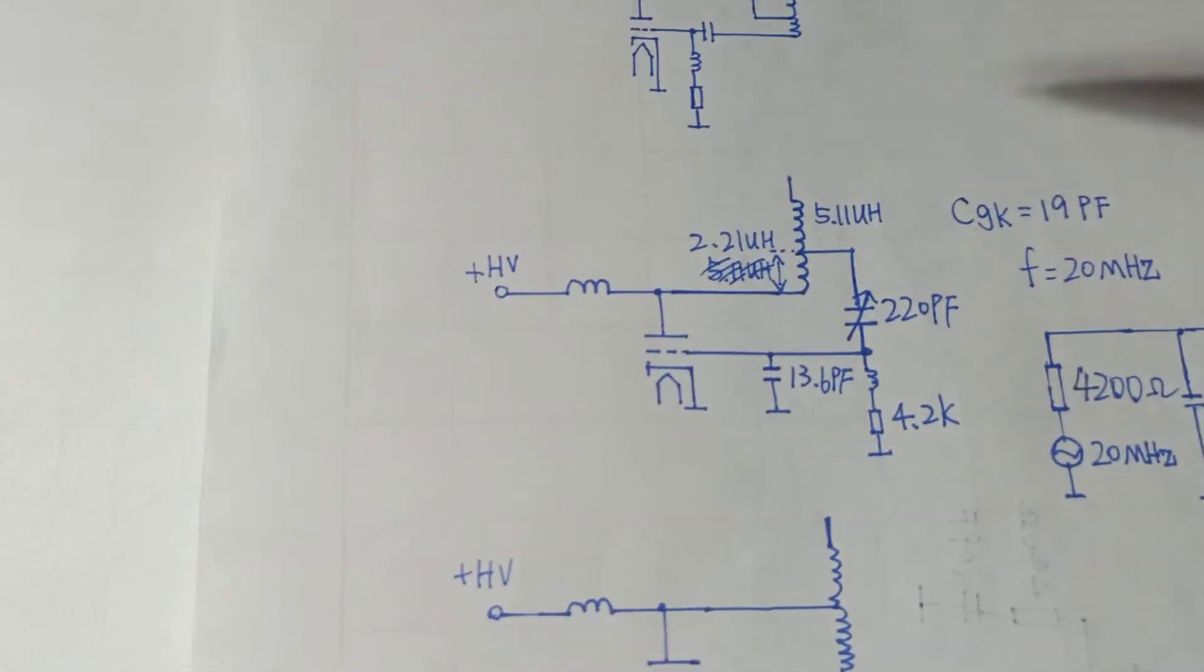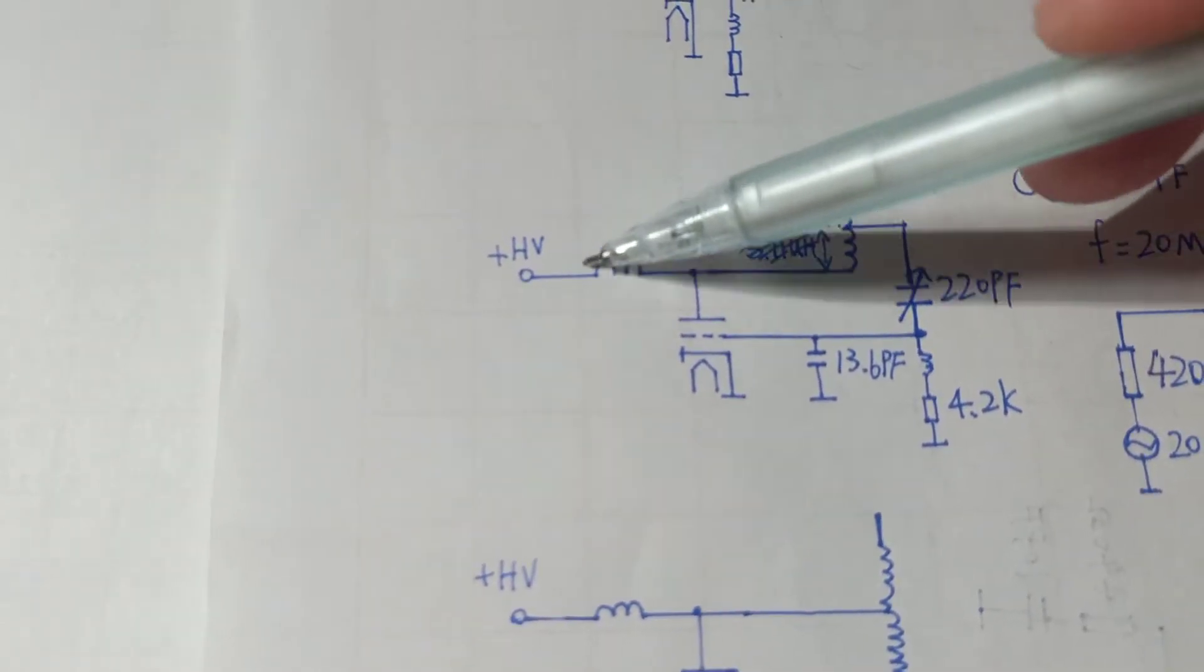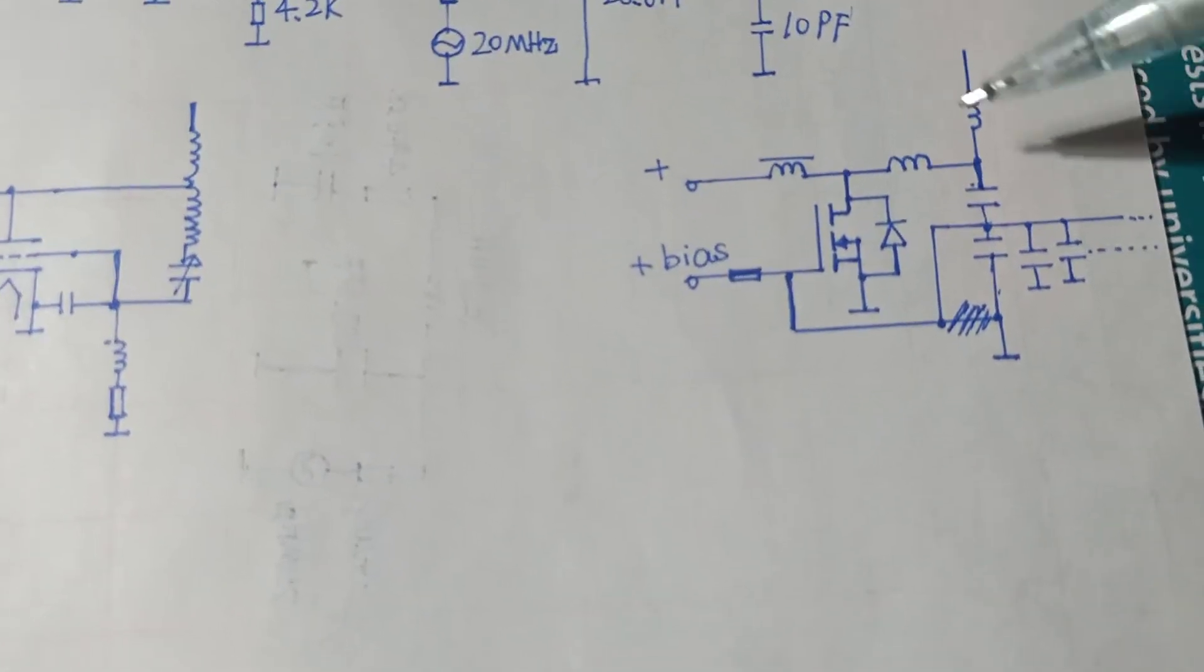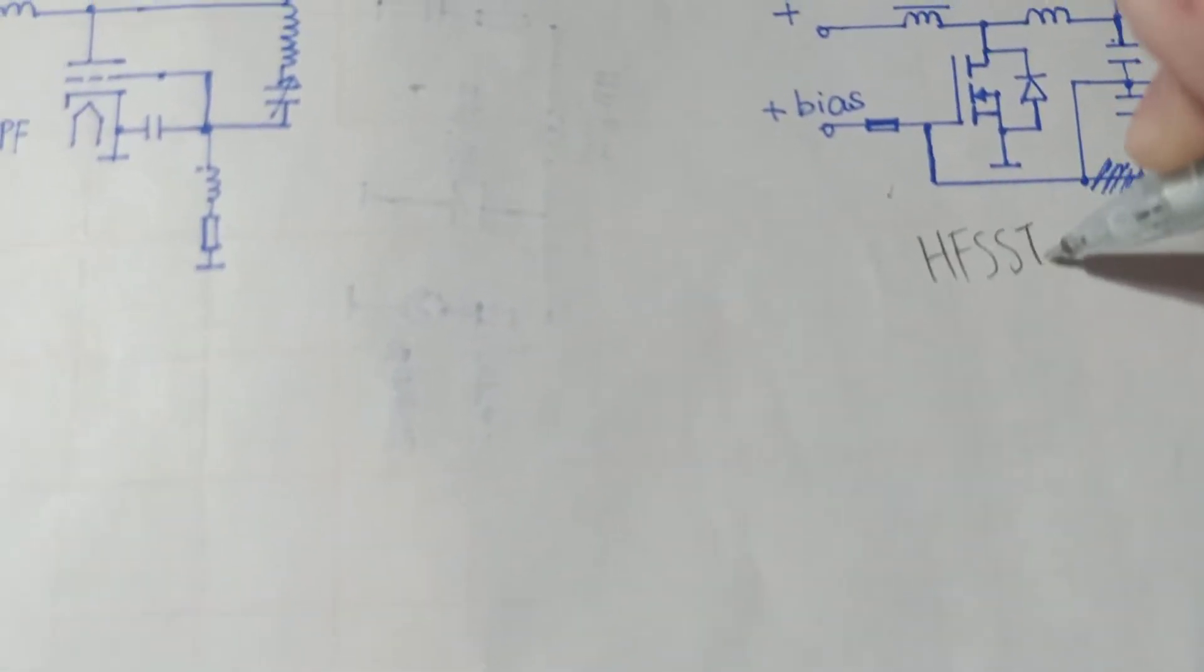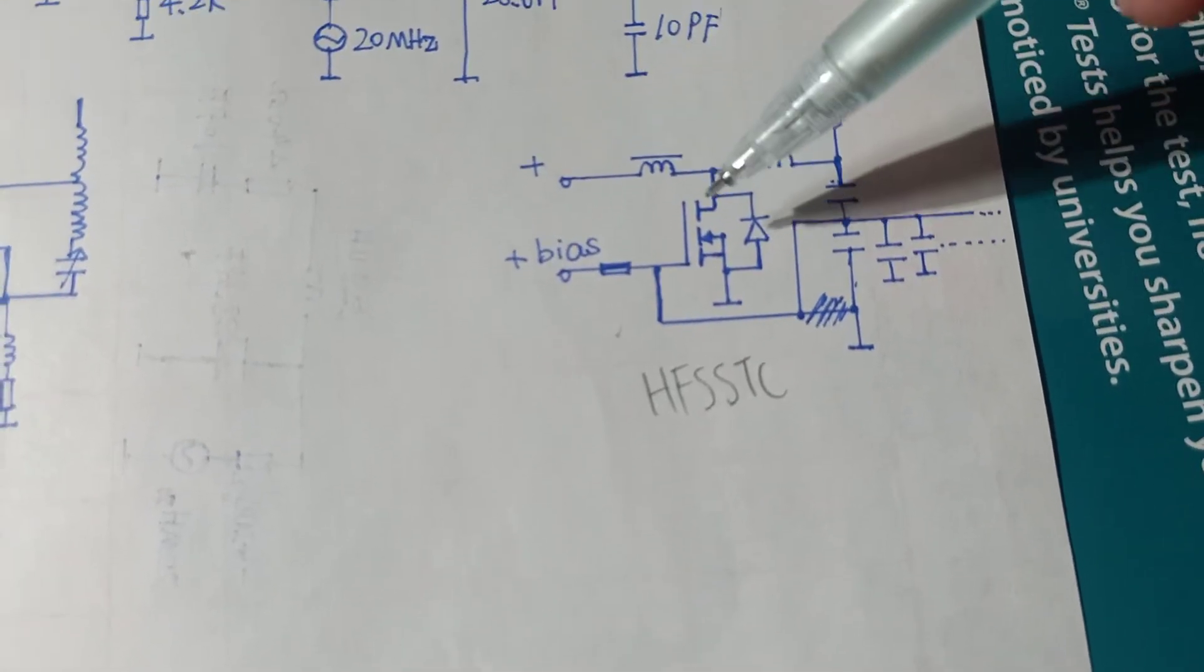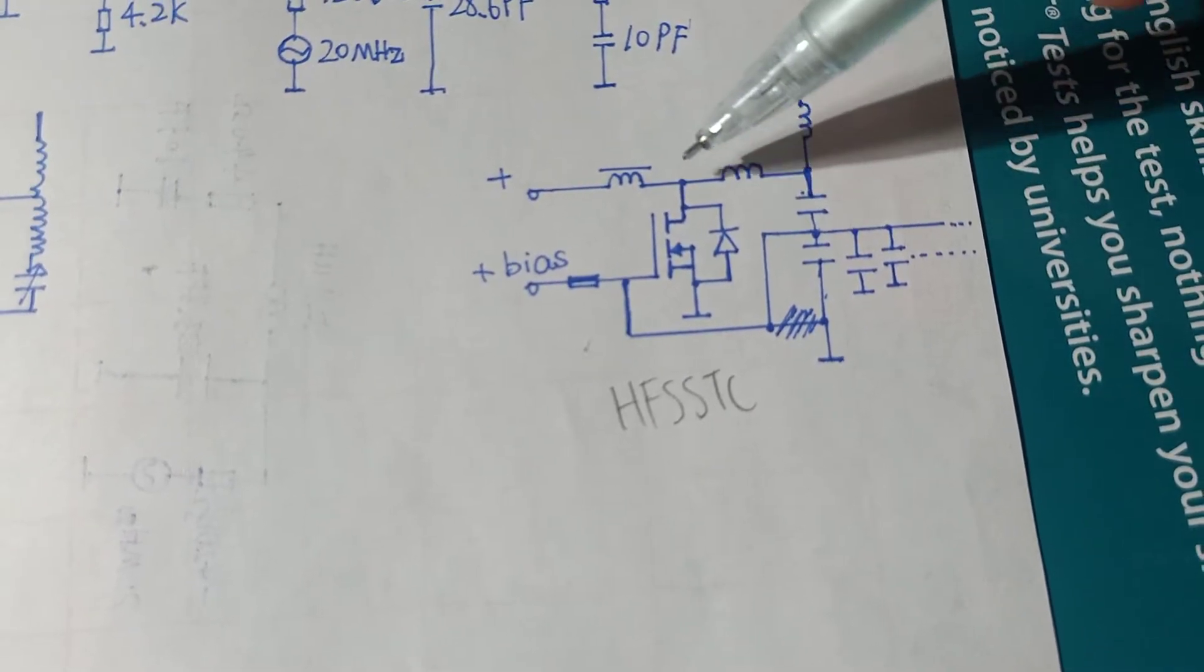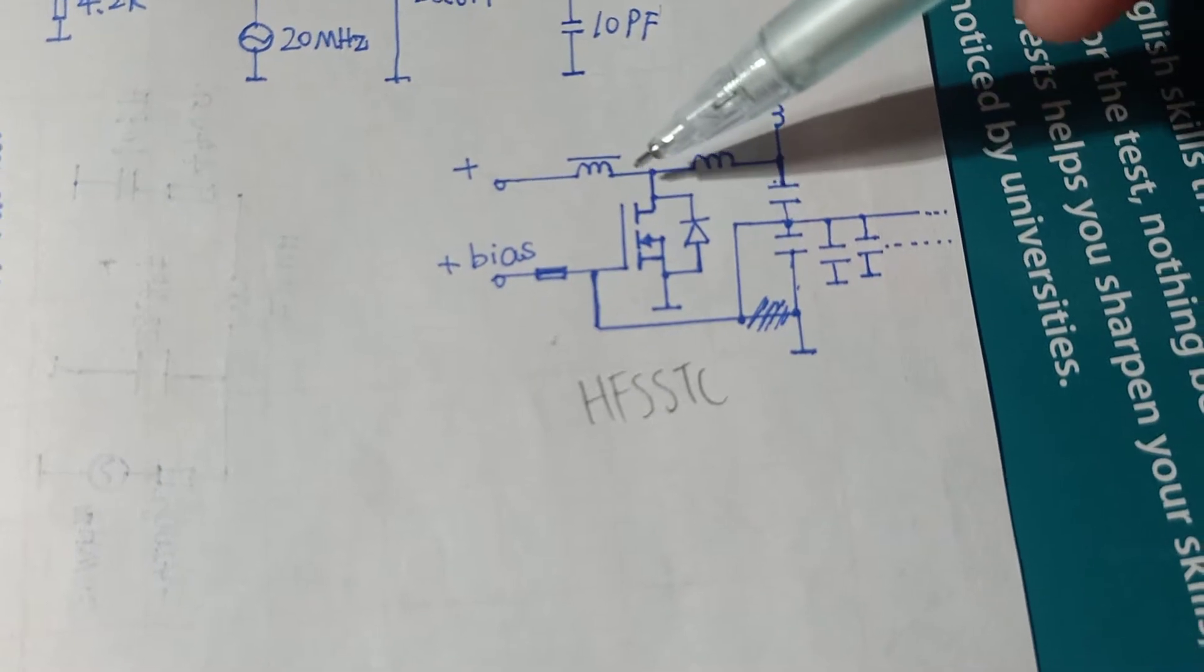Let's look at it. Firstly, this is still a triode, and this is still the RF choke. What I noticed is that if you look at an HF-SSTC, high-frequency solid-state Tesla coil, you will actually see a schematic like this. This one here is the RF choke. This is the main resonant coil.